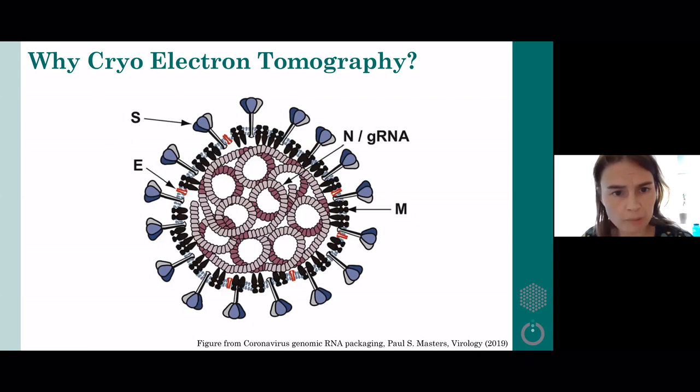A lot of labs managed to get a high-resolution structure of this using a technique called single particle analysis, a method of cryo-electron microscopy. But this method managed to reveal only the head of the spike. From the principle of how it works, it's not possible to resolve more than just small pieces. So in this case, this was the S-protein upper part, but the rest of the virus remained unknown.